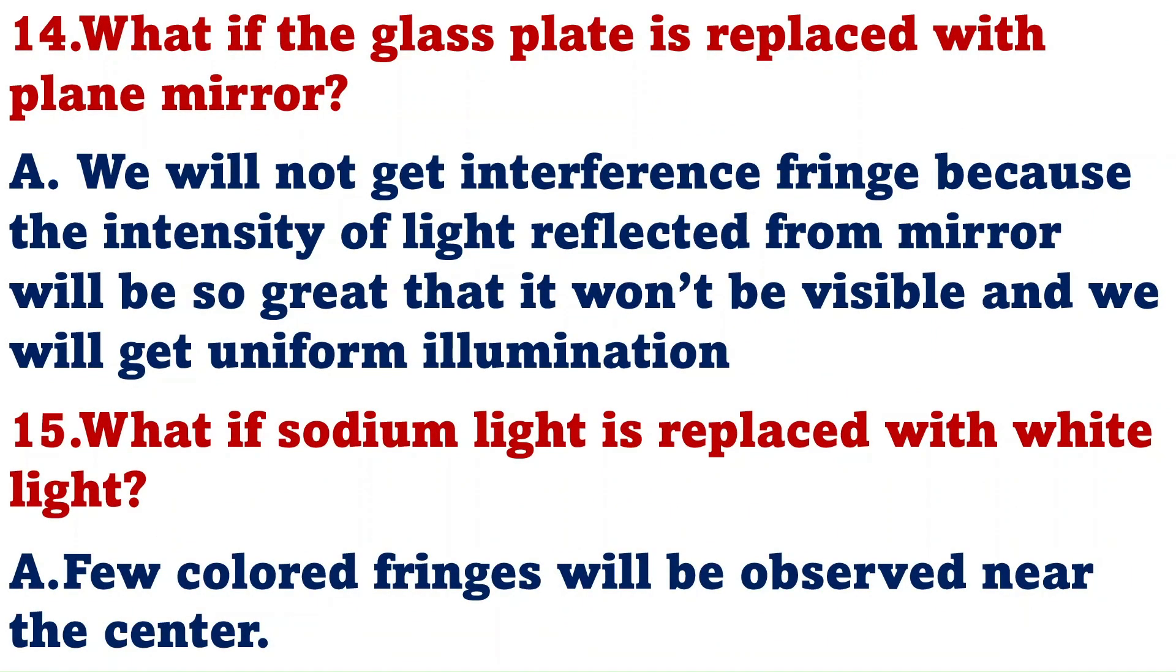What if the glass plate is replaced with plane mirror? We will not get interference fringes if we replace the glass plate as plane mirror, because the intensity of light reflected from mirror will be so great that it won't be visible and we will get uniform illumination.